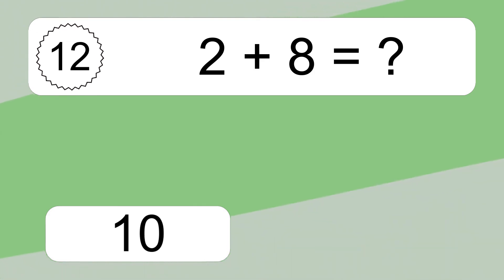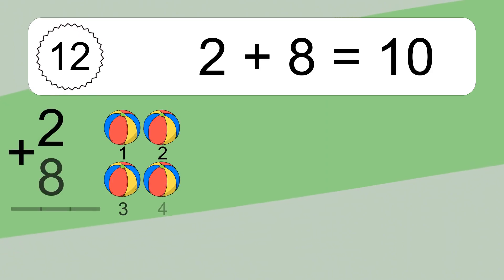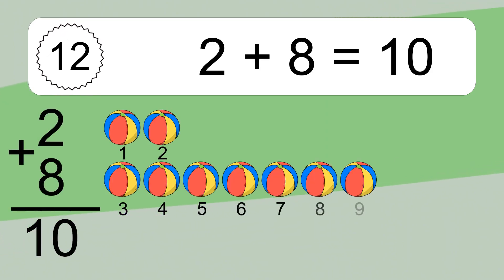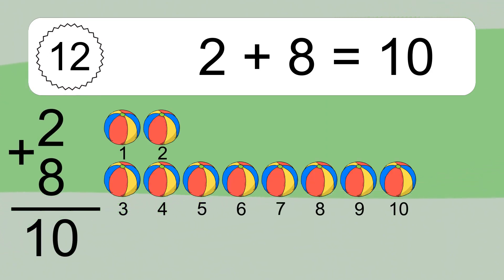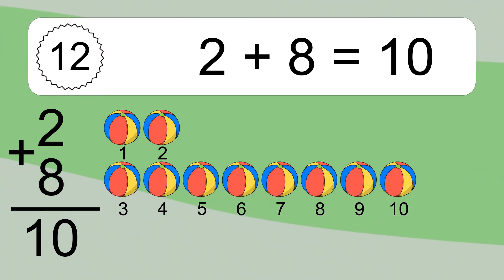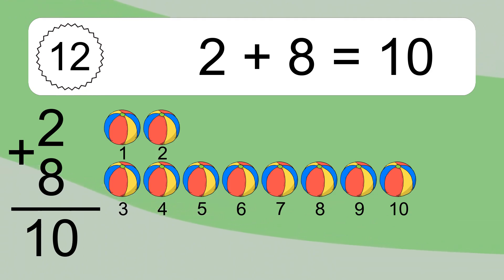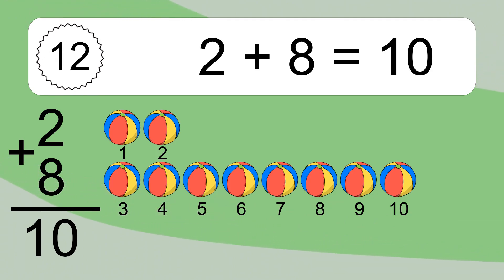2 plus 8 equals what? 2 plus 8 equals 10. Let's count it: 1, 2, 3, 4, 5, 6, 7, 8, 9, 10.